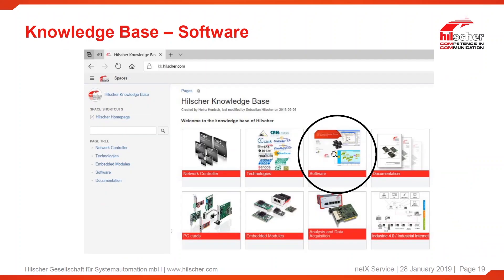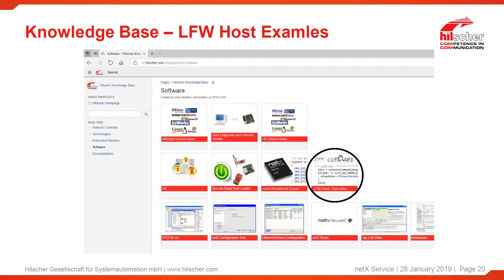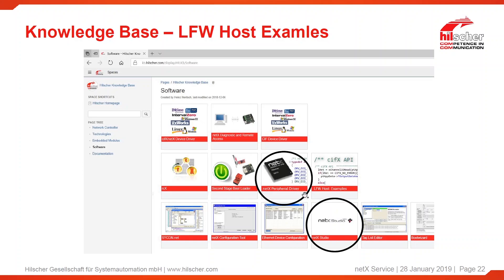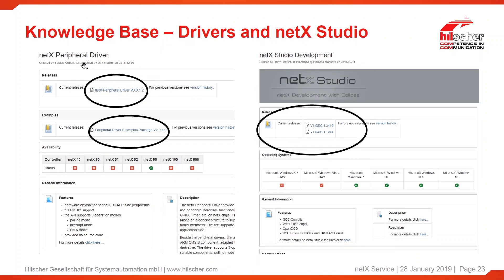In the next area, we find the software area. In the software area we have several interesting parts. Starting with the host examples, you may choose the Profinet example and then choose the NETX 90 as a platform. Then you have the download area where you can download the stack examples we provide. Aside from the firmware and host example area, we have the NETX peripheral driver area and the NETX Studio area. In the peripheral driver area, we provide you with a package containing just the peripheral drivers on their own, together with a precompiled Doxygen document, so you do not have to compile it yourself and can look it up directly.